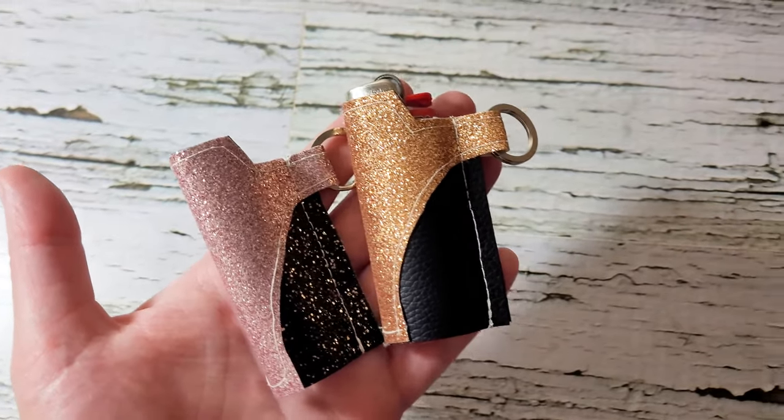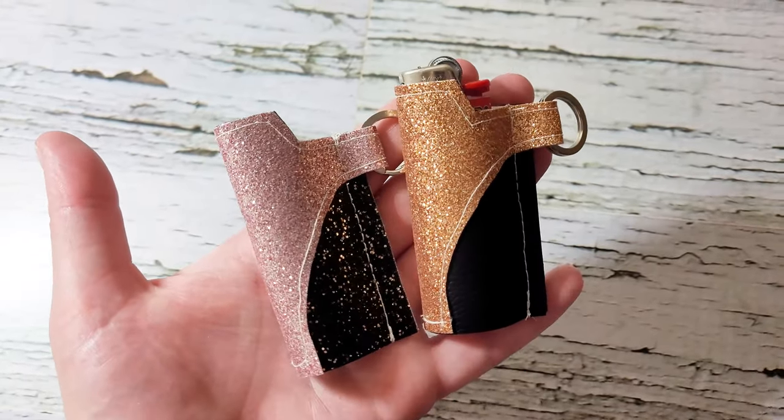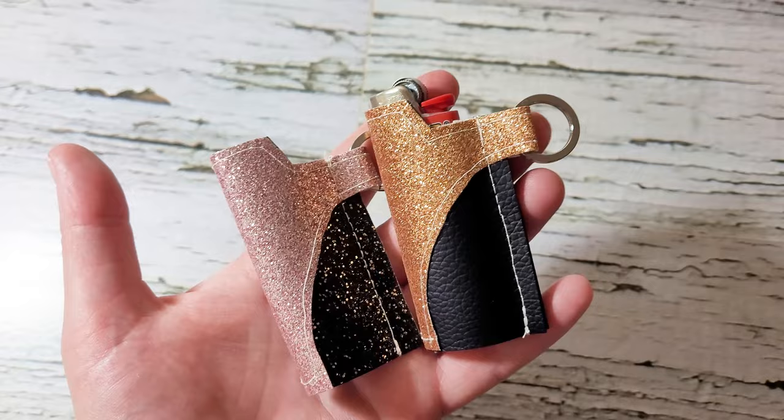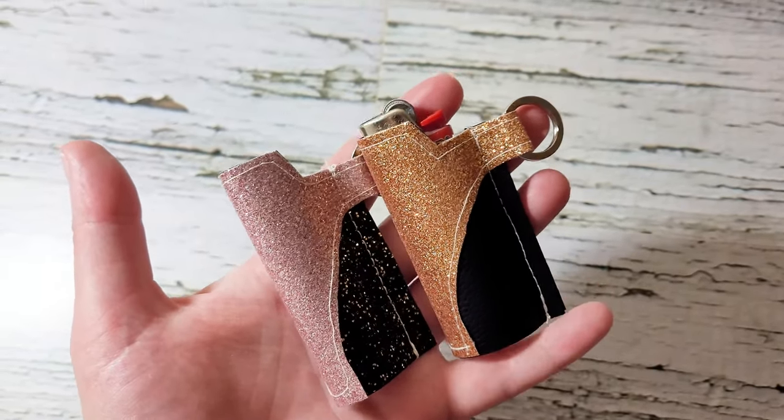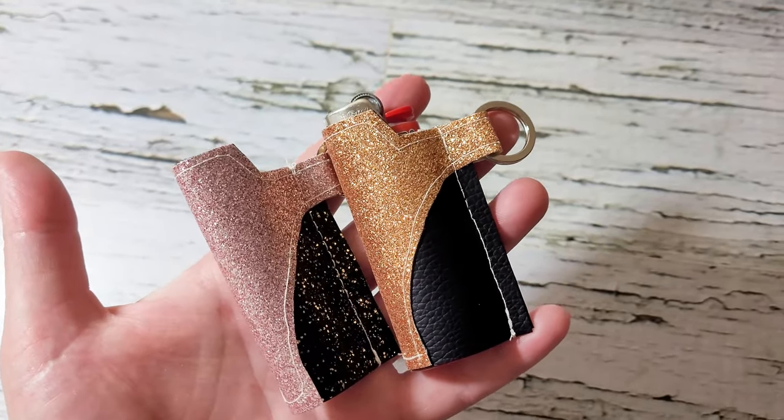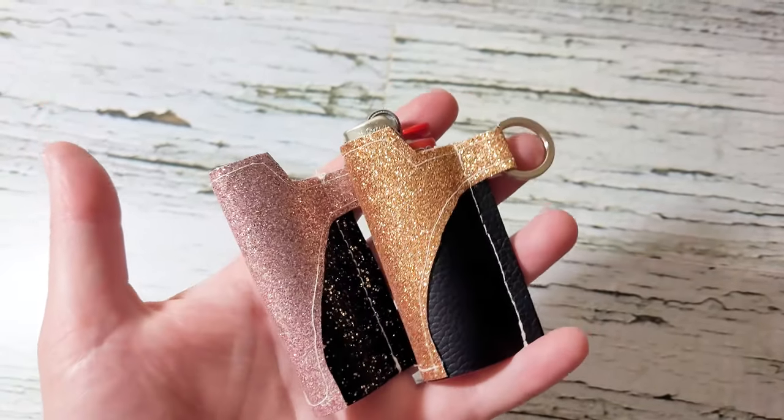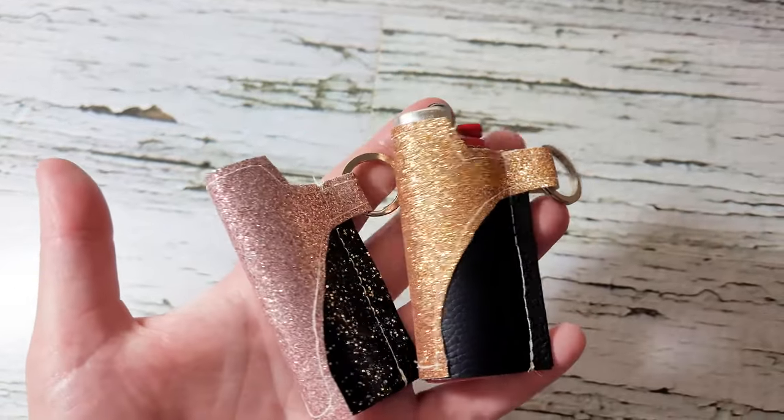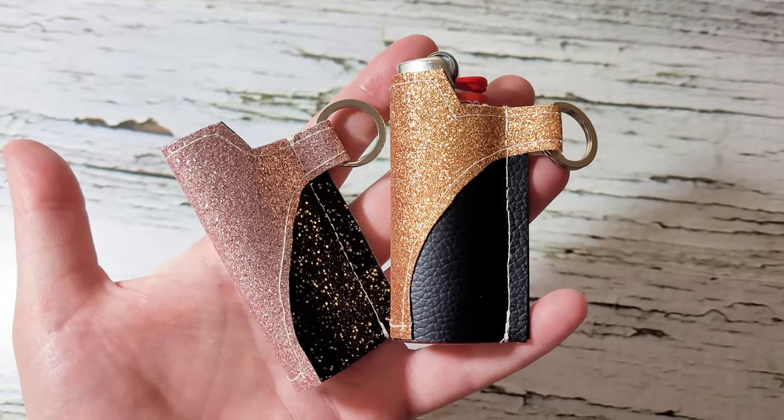You can cut them out with your Cricut and then sew them up with your sewing machine. They're a really great way to attach your keychain to your lighter and then you can just have that on the outside of your purse. It keeps it handy and they're super cute. Let's get started.